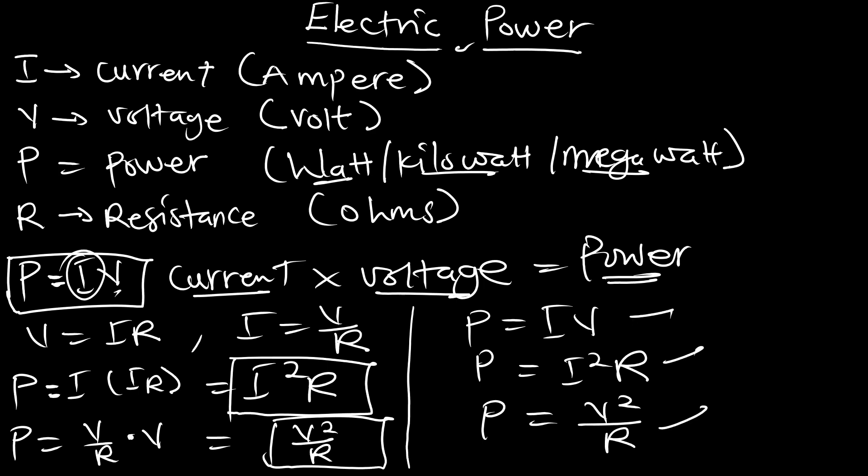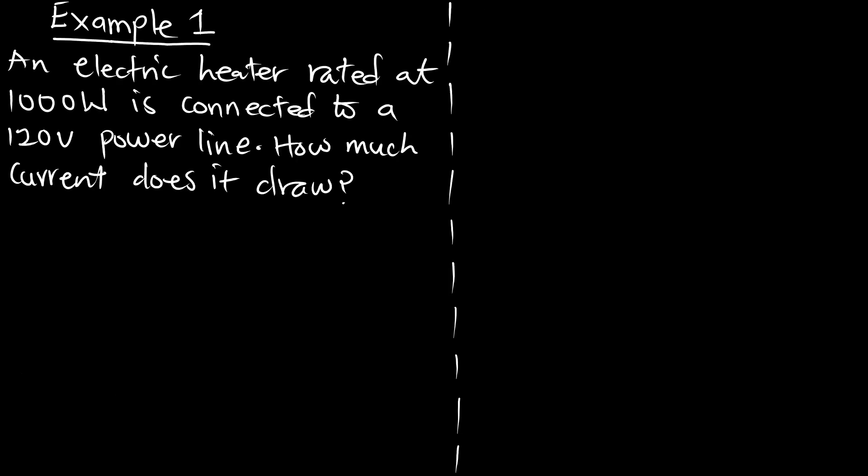Now let's try some examples and calculate for the various parameters involving power. Example one: an electric heater rated at 1000 watts is connected to a 120-volt power line. How much current does it draw?